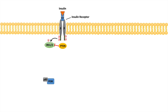When IRS one and two are phosphorylated, they will recruit P85 and PI3K to itself. PI3K becomes active and will actually phosphorylate PIP2, or phosphatidylinositol diphosphate, into PIP3, or phosphatidylinositol triphosphate. Because this PI3K mechanism is occurring and converting PIP2 to PIP3, PIP3 will actually accumulate in concentration within the cell.